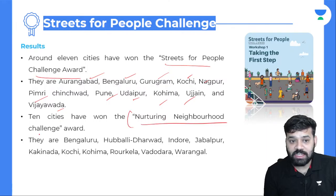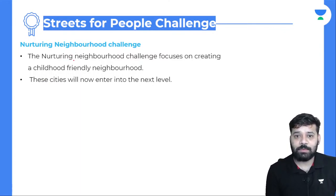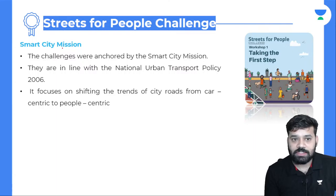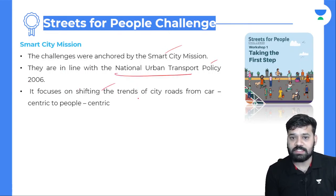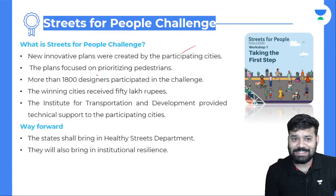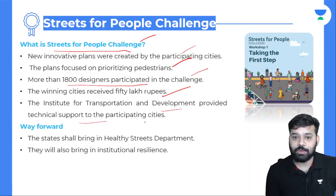Ten cities have won the Nurturing Neighbourhood Challenge. They are: Bengaluru, Udupi, Indore, Jabalpur, Kakinada, Kochi, Kohima, Rourkela, Vadodara, and Varanasi. The Nurturing Neighbourhood Challenge focuses on creating a child-friendly neighbourhood. These cities will now enter the next level. The challenges were anchored by the Smart Cities Mission, in line with national urban transport policy, focused on shifting city roads from car-centric to people-centric. More than 1,800 designers participated in the challenge, and winning cities received 50 lakh rupees. The Institute for Transportation and Development provided technical support.